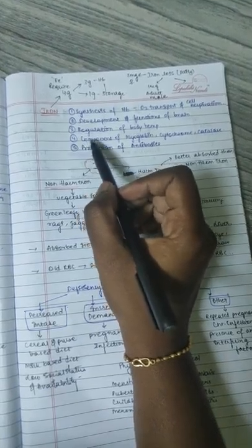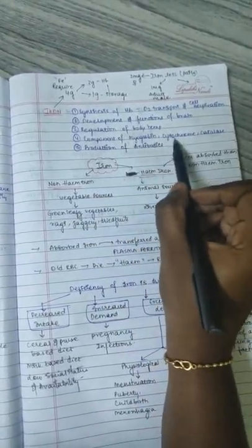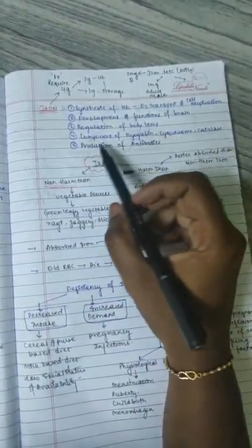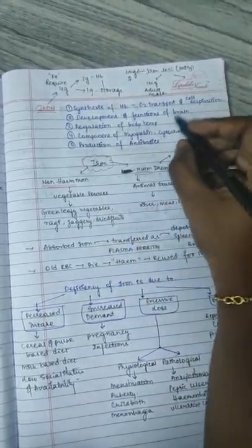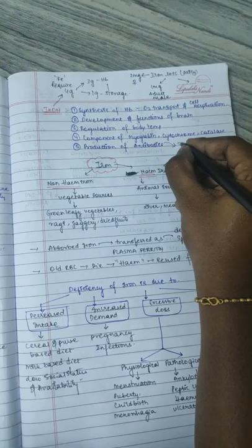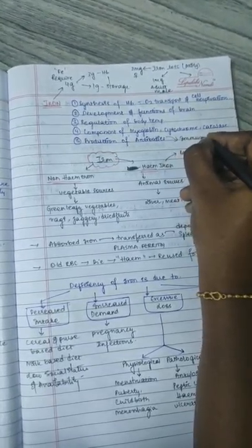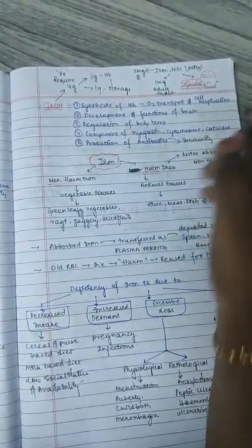It is a main component of myoglobin, cytochrome, and catalyst enzymes in some proteins. It also helps in the production of antibodies, which play a main role in the immune system.